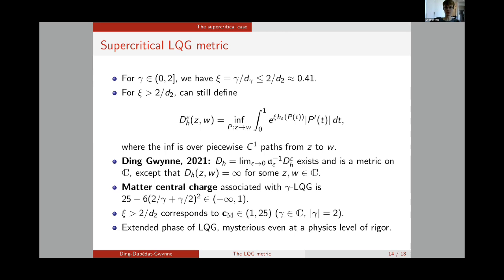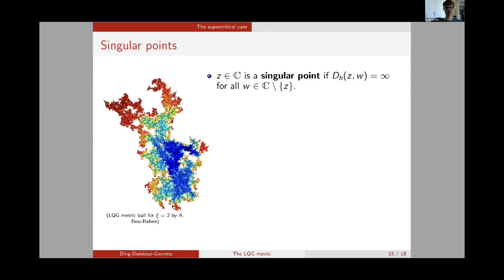Here on the left I've shown a computer simulation of a Liouville quantum gravity metric ball in the case when xi equals two, which corresponds to a point in the supercritical phase — remember the critical value is approximately 0.41. This is produced using the same procedure as the simulation of the subcritical LQG metric ball shown earlier. As you can see, in contrast to the subcritical case, in the supercritical case this metric ball looks a lot more fractal. There are many more little holes — little white regions disconnected from infinity by the ball — and the boundary looks even rougher.